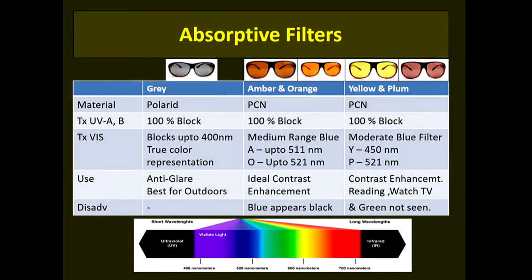The gray filters are polaroid in nature; the rest are made of polycarbonate. All of them block ultraviolet A and B 100%. Gray is best for outdoor anti-glare protection. Amber and orange provide general contrast enhancement, while yellow and plum are specifically good for indoor contrast enhancement. A disadvantage of the blue-blocking filters is that the blue color appears black and green is not seen when wearing them.